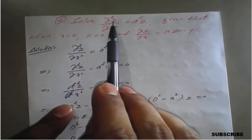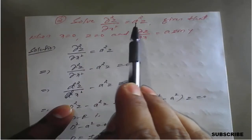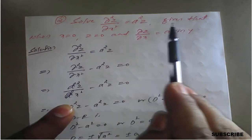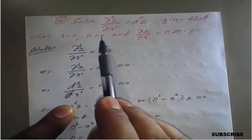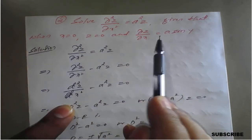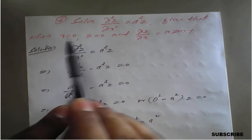The question is: solve ∂²z/∂x² = a²z, given that when x = 0, z = 0, and ∂z/∂x = a·sin(y).